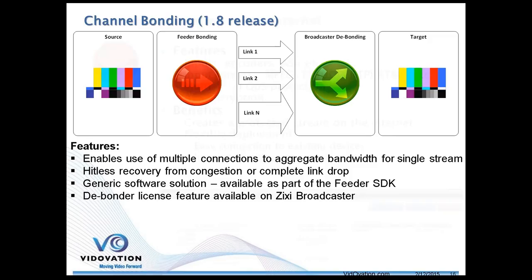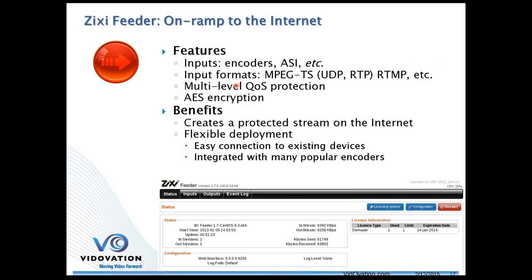The feeder, whether inside or outside the encoder, can accept an MPEG transport stream, UDP, RTP, RTMP, or just about any format or protocol. We have multi-level QoS protection and encryption. It creates a protective stream that goes over the internet and integrates easily with your devices — integrated with many popular encoders, or using a feeder appliance outside of your existing encoders.